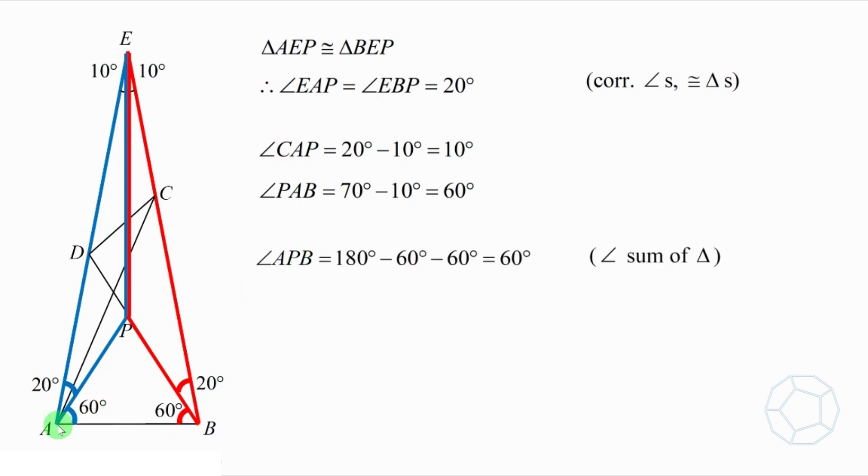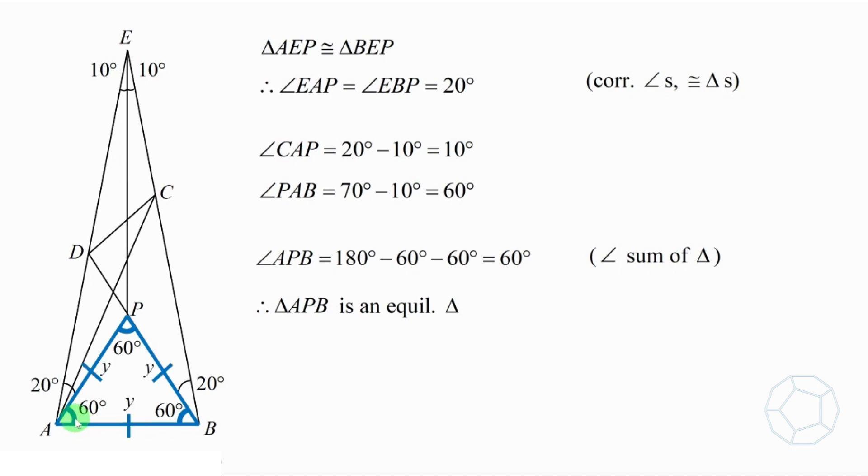Using angle sum of triangle again, then angle APB is equal to 60 degrees. So the blue triangle APB is an equilateral triangle. That means the three sides are of equal length. Let them be Y.